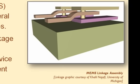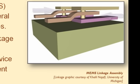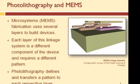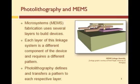Each layer is a different component of the device and requires a different pattern. Some layers are used as spacers — you can see spaces between the linkages — and then removed at the end of the process. However, even these layers require a pattern to open up spaces for subsequent layers. So how do we get these patterns on each layer? Photolithography.